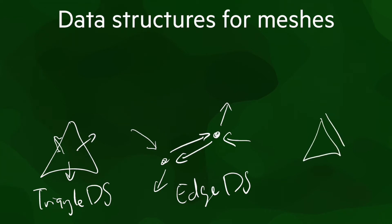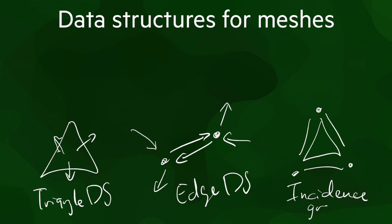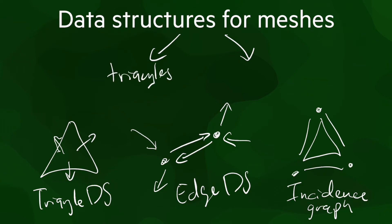And incidence graphs, which store everything: polygons, edges, and vertices. If we have a mesh composed only of triangles, the most efficient approach is usually a triangle-based data structure. If you need arbitrary polygons, then the most common approach is to store a model using an edge-based data structure. Although incidence graphs can be useful when you need to store extra information inside all of the elements.